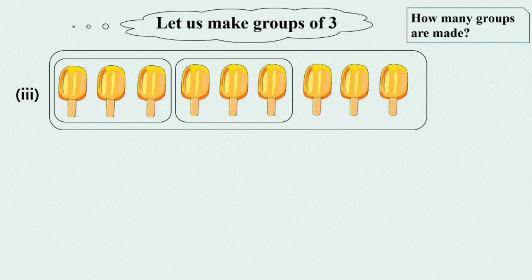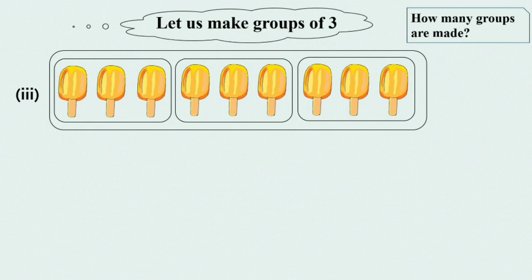2 groups are ready and some ice creams are left. We can make another group. So here is the 3rd group of 3 ice creams. Now we have 3 groups of ice creams. We will write 3 in the box.